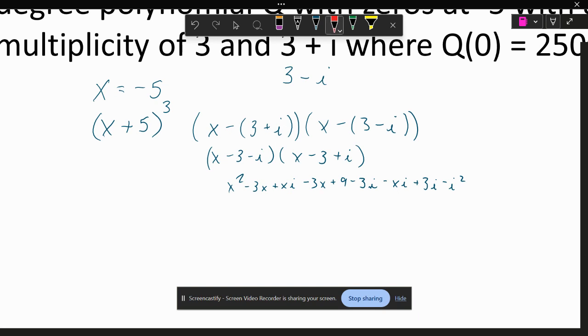When I go to simplify, I'll be left with x squared. Negative three x and negative three x become negative six x. Xi and negative xi will cancel. Negative three i and positive three i will cancel. I'll be left with plus nine. And then remember this becomes minus negative one, so it'll be plus one.